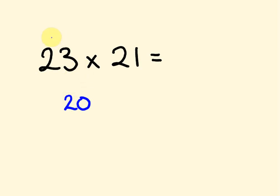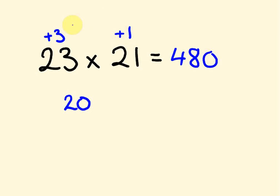So first off we considered these numbers according to the base. This one is three more, and this one is one more. Then we add across: 21 plus 3, or 23 plus 1, and we get 24. What we've essentially been doing is multiplying by this base — so 24 doubled gives us 48, times 10 which is 480. Then we add the units part: 3 times 1 is 3, giving us the answer 483.